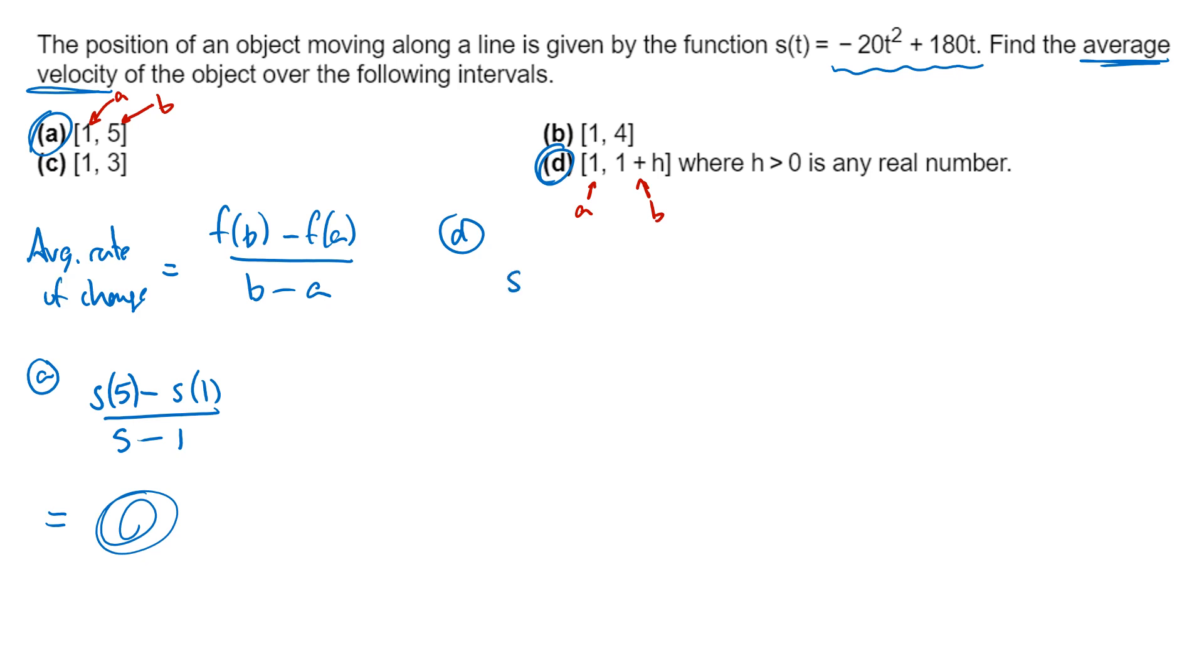So the average rate of change is going to be s of b, which is s of 1 plus h, minus s of a, which is s of 1, and then divided by b minus a. So I'm going to plug 1 plus h into my function. That's negative 20 times 1 plus h squared plus 180 times 1 plus h. That's my s of 1 plus h. And then minus s of 1, that's going to be negative 20 times 1 squared plus 180 times 1.